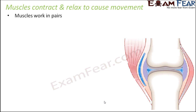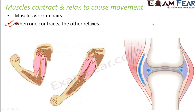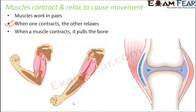When one muscle contracts the other relaxes — that is the strategy they follow. When this muscle is contracting, it is pulling the bone in this direction, and at that same time the other muscle is relaxing. Then in the next moment, that other muscle contracts and pulls the bone back in the original direction. That is how the movement of bones is controlled by muscles.